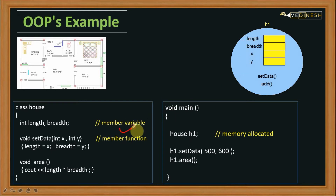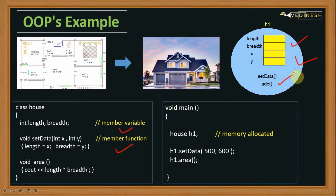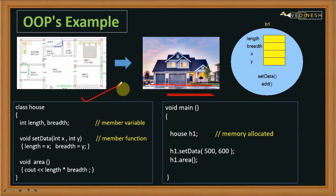All the member variables and functions will get memory only when we create the object. It means when we are creating the object we are actually creating the actual house, so you can see that it is taking some land — but the map of the house does not occupy any space.